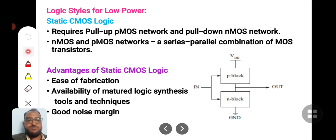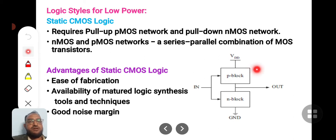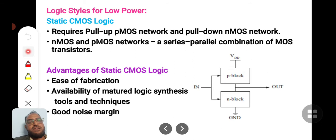Welcome back to my lectures. In this lecture we will be discussing logic styles for low power consumption. The first one is static CMOS logic. In static CMOS logic there will be a pull-up and pull-down network. Pull-up is always made of PMOS logic and pull-down is always an NMOS logic. In NMOS logic, if a connection is in series that will be reversed to parallel in PMOS logic — that is how we realize the given function in CMOS.